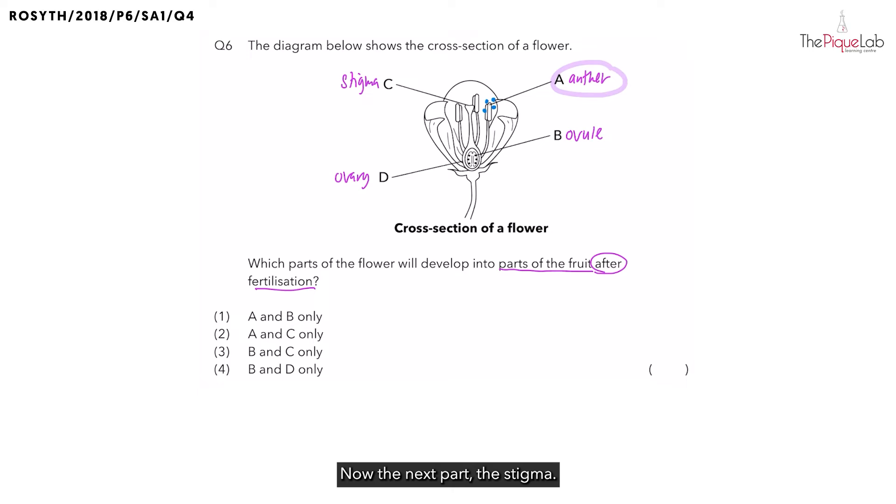Now, the next part, the stigma. What is the function of the stigma? The stigma receives the pollen grain.